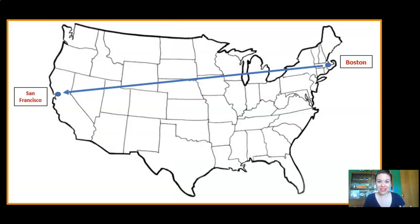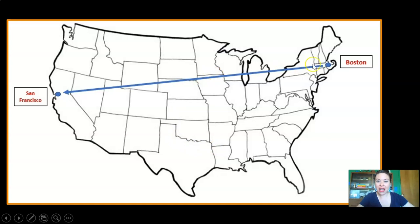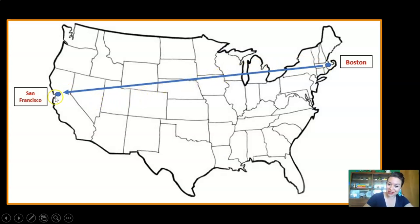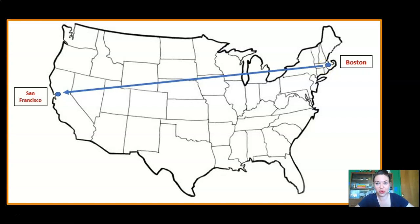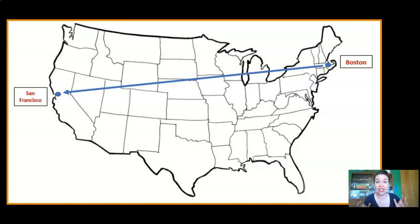Look at this map. Do you know what this is a map of? Yeah, it's the United States of America. Here's Boston way over here on the East Coast. San Francisco is way over here on the West Coast in California. Boston is in the state of Massachusetts. The main character moved from Boston, Massachusetts all the way across the United States to San Francisco, California. These two places have very different weather.